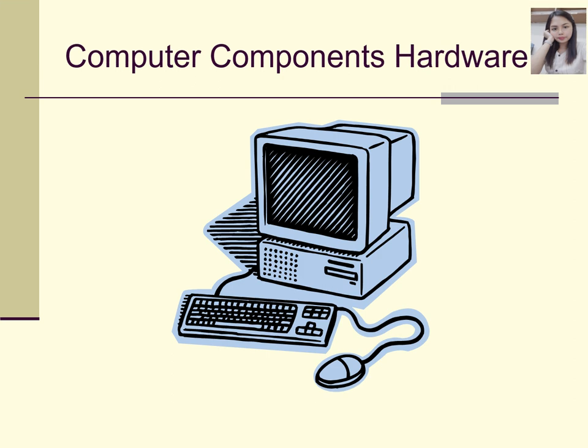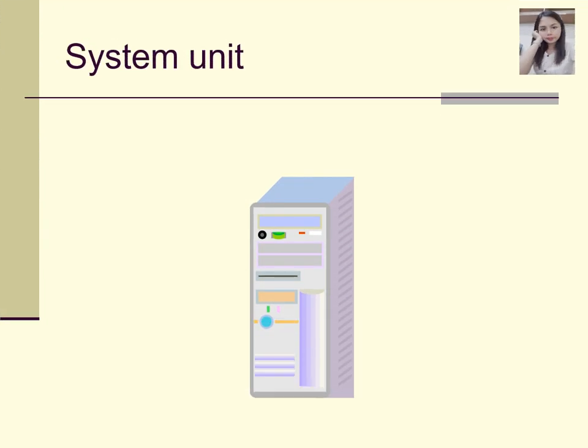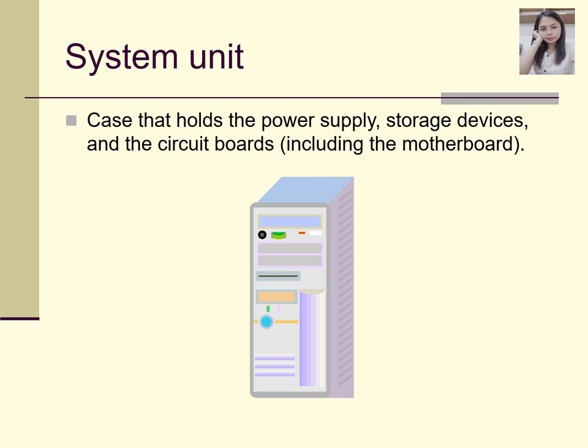Let's proceed now to computer components and hardware. In this picture, you can see the whole setup of a computer. This is an example of a system unit — it is a case that holds the power supply, storage devices, and circuit boards including the motherboard. This is the main brain of our computers or laptops.